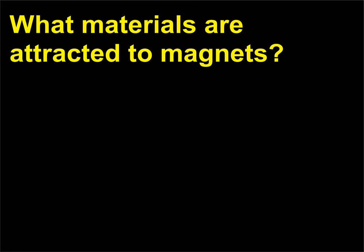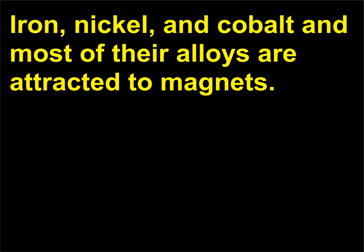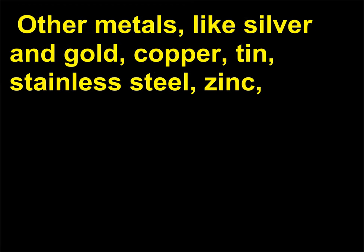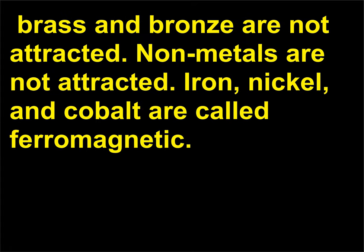What materials are attracted to magnets? Iron, nickel, and cobalt and most of their alloys are attracted to magnets. Other metals like silver and gold, copper, tin, stainless steel, and zinc — as well as brass and bronze — are not attracted. Nonmetals are not attracted. Iron, nickel, and cobalt are called ferromagnetic.